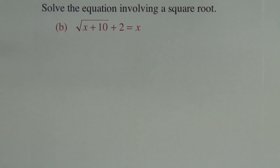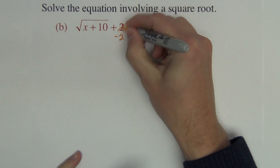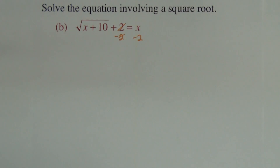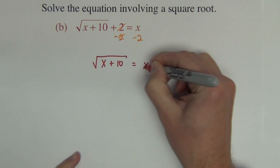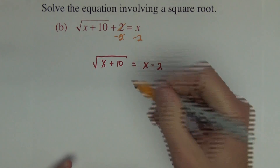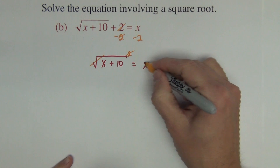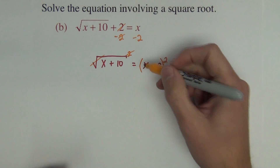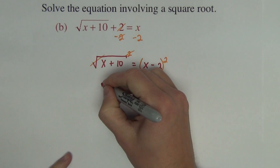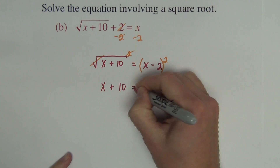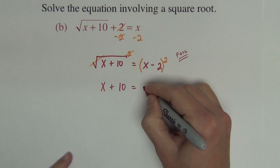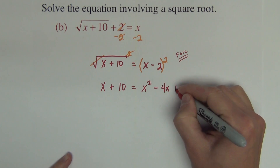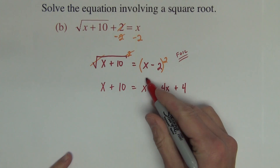In the next problem, the first step is the same: we have to get the radical all by itself, so we subtract 2 from both sides. The result is square root of x plus 10 equals x minus 2. We square both sides — adding parentheses on the right side — giving x plus 10 on the left, and we must FOIL out the binomial squared on the right, getting x squared minus 4x plus 4. So now we have a quadratic equation.